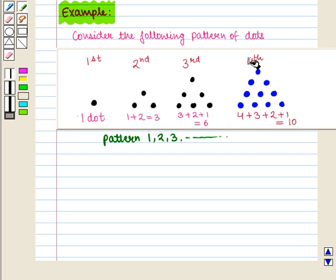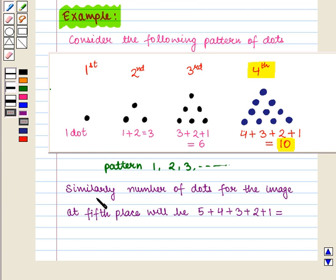Now this is the required image at fourth place with total number of dots as 15. Similarly, number of dots for the image at fifth place will be five plus four plus three plus two plus one which is equal to 15.